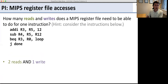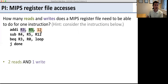Let's go through this problem: how many reads and writes does the MIPS register file need to be able to do for one instruction? The answer is we need to be able to do two reads and one write. The first instruction needs to write one value (R3) and read one value (R5), but the other value is an immediate — it doesn't come from the register file. So that instruction needs one write, one read, and a constant.